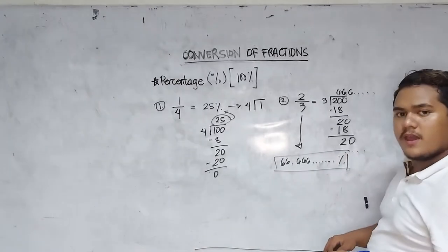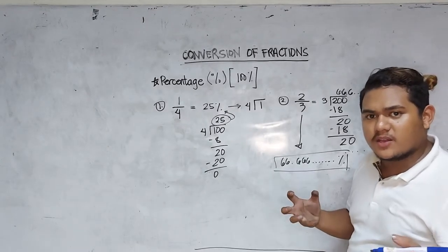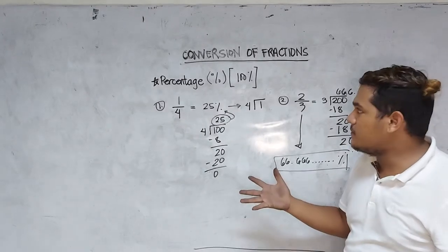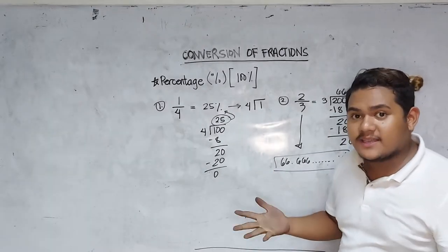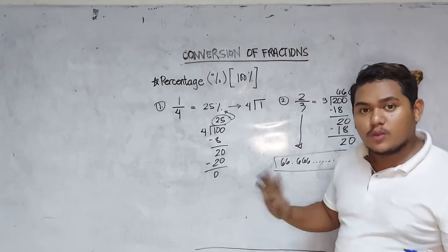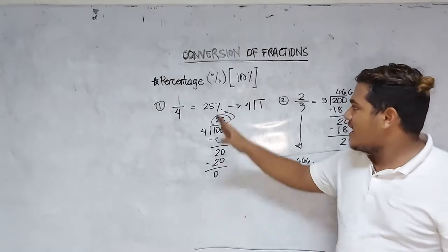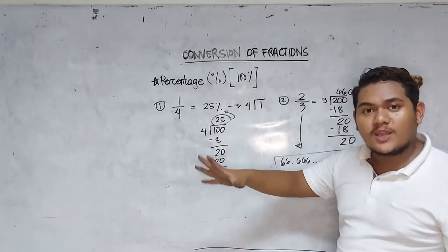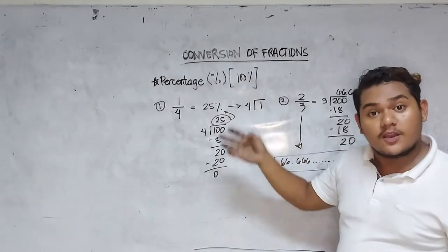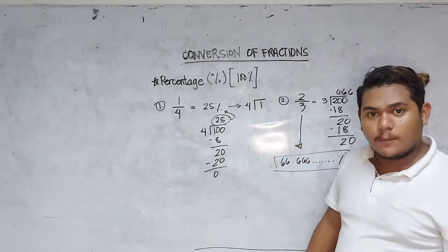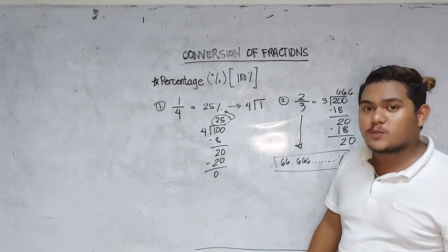So, how do you convert fractions into percentage? Basically, you only need to multiply the numerator by 100 — that is, times 100.